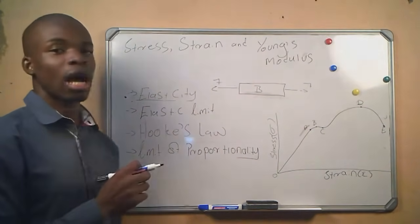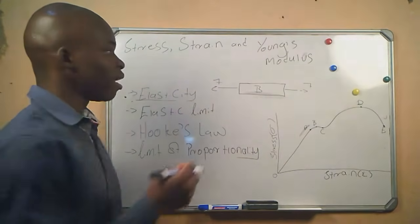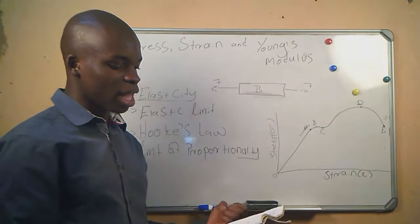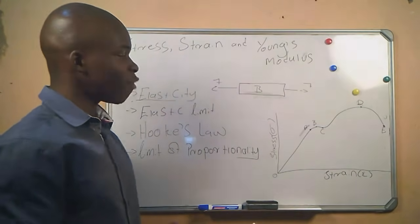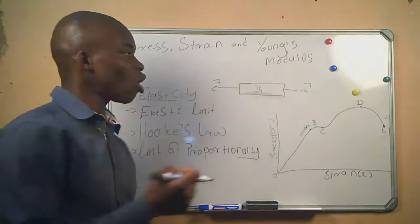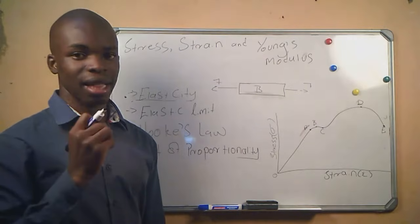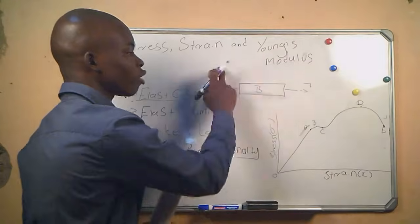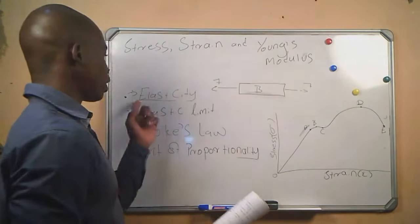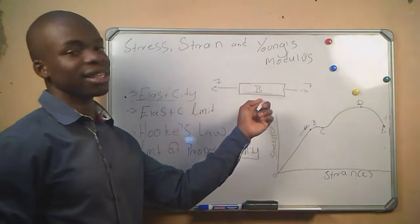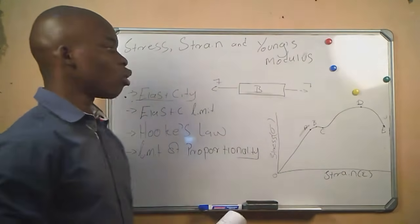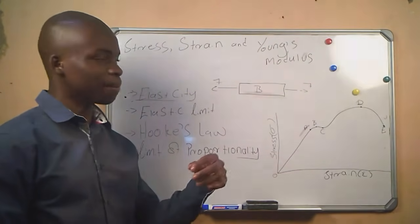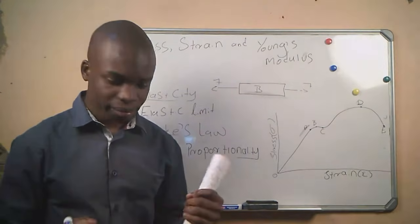That brings us to our first term, which is elasticity. Elasticity is defined as the property of a material to return to its original form when the force causing the strain is removed. The ability of this material to go back to its original form after the two forces are removed is its elasticity. If a material is able to return back to its original form, we say that material is elastic.